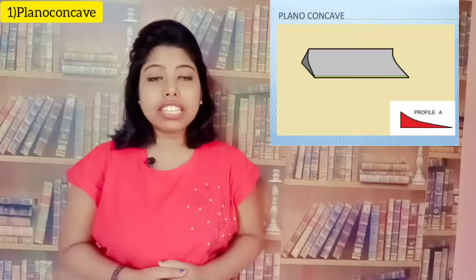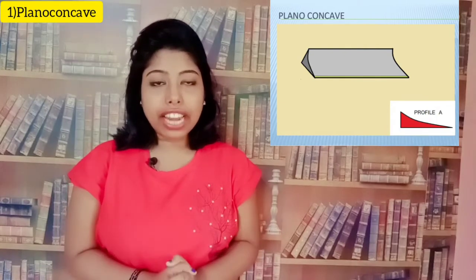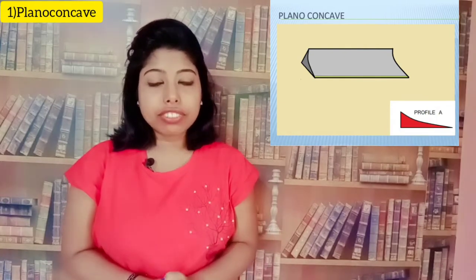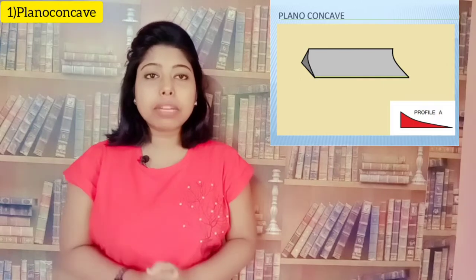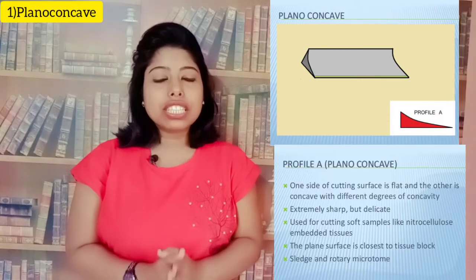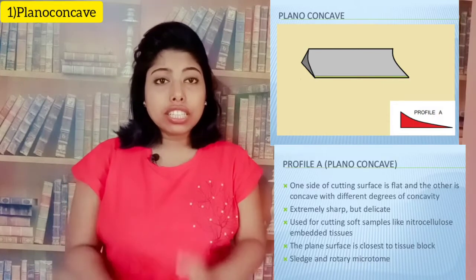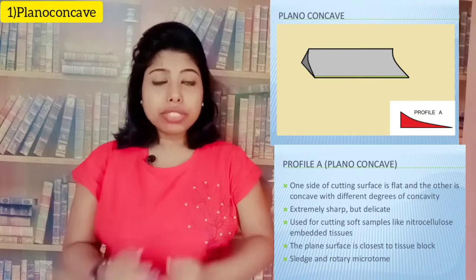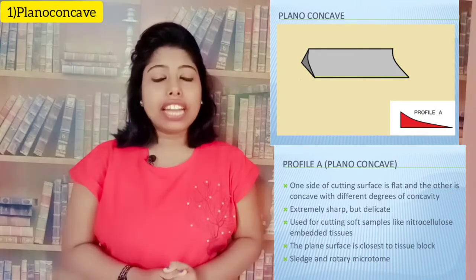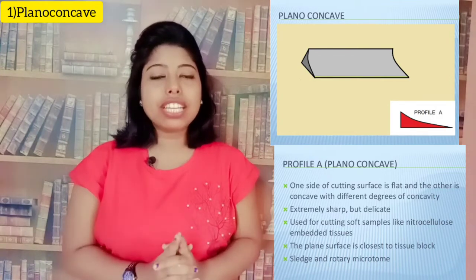The first knife is the plano-concave. One side of the cutting surface is concave and the other is flat — hence the name plano-concave. It is used in the sledge microtome as well as the rotary microtome. It is used for soft samples like nitrocellulose embedding medium and is extremely sharp as well as delicate.